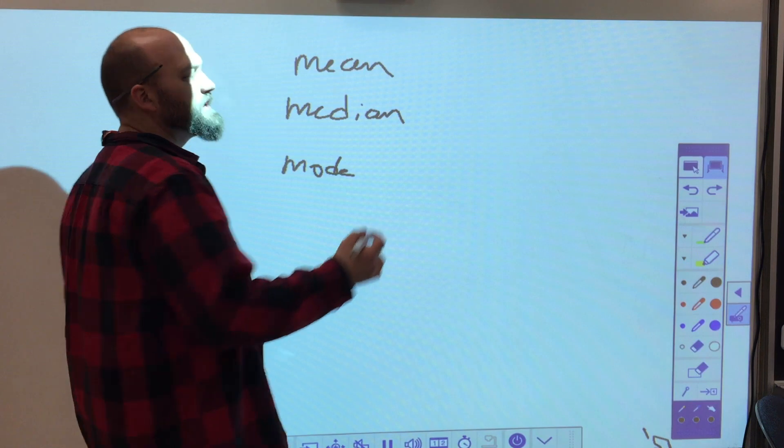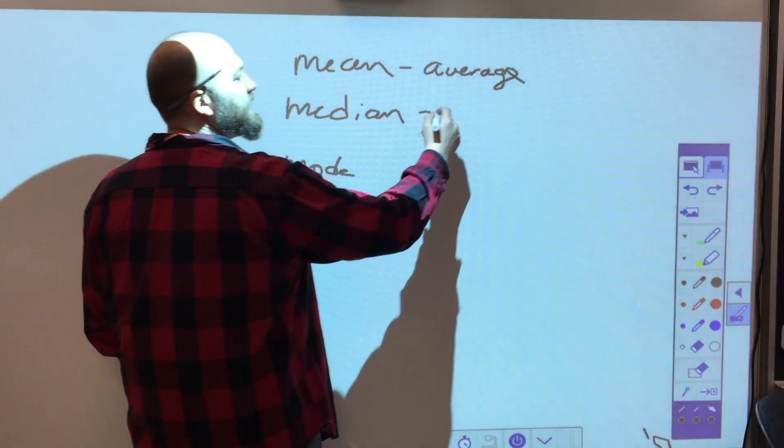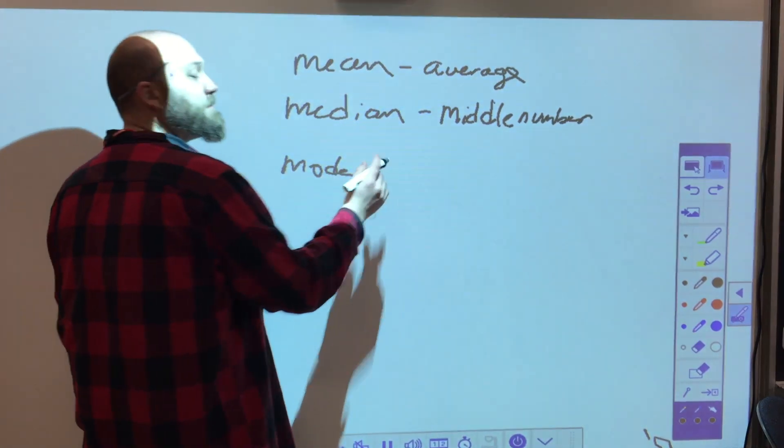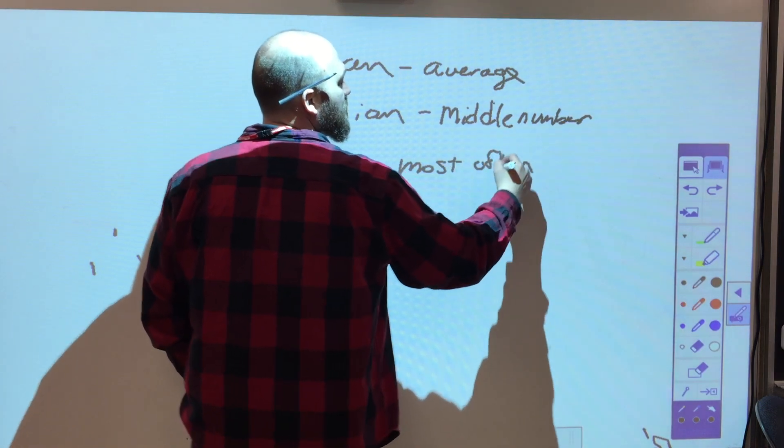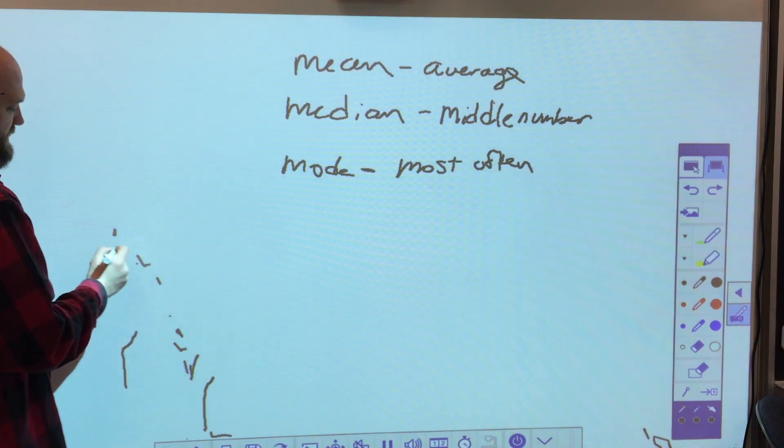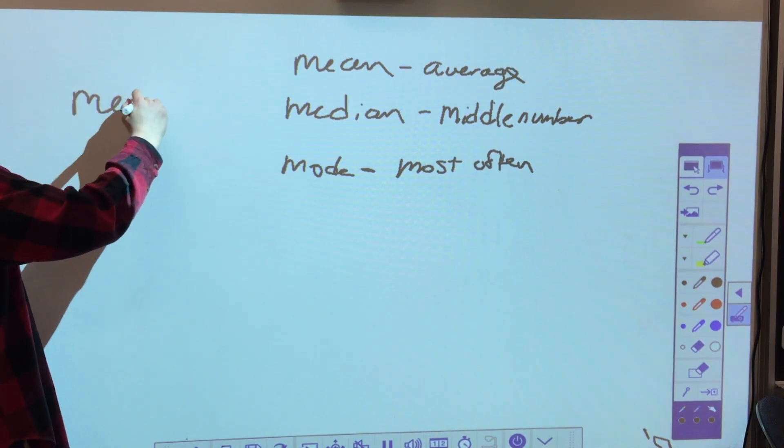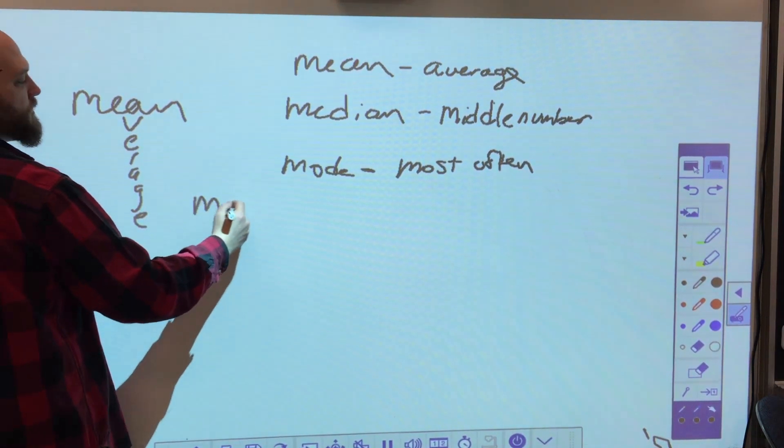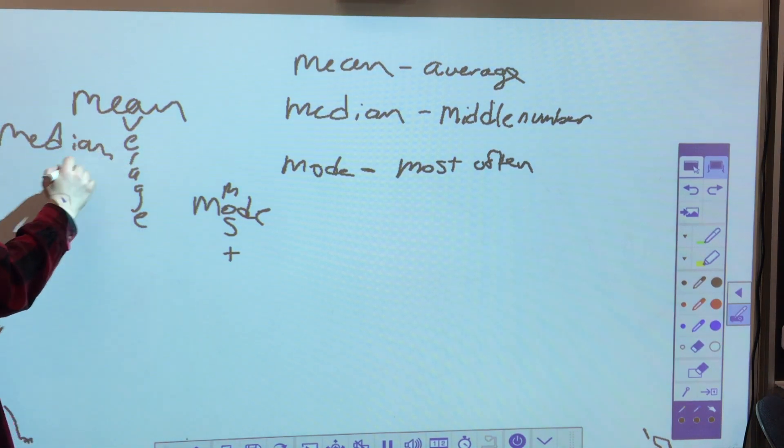The way that I remember these is the mean is your average, the median is the middle number, and the mode occurs most often. I might say the mean is the average, the mode occurs most, and the median has a D in the middle.